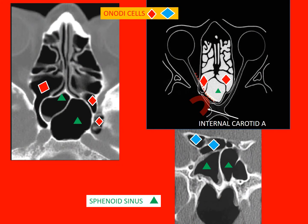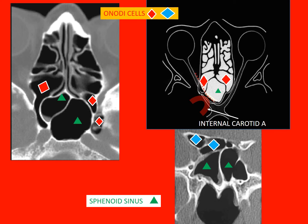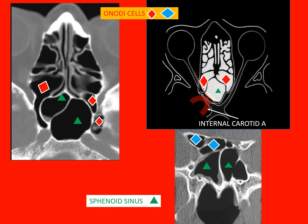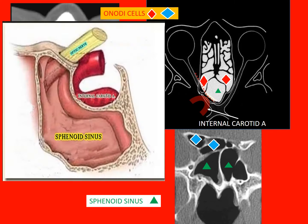The number of posterior ethmoid cells varies between 1 and 5. The most posterior cells may develop laterally along the sphenoid sinus and extend beyond its anterior wall, or may extend superiorly over the sphenoid sinus. These cells which extend laterally or superiorly are called the ONOD cells. The ONOD cells may lie in close association with the optic nerve and the internal carotid artery, something which should be borne in mind when surgically approaching these cells.